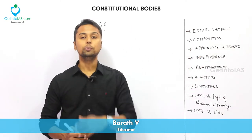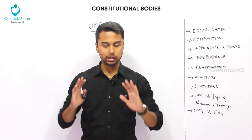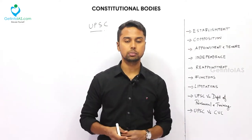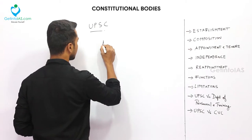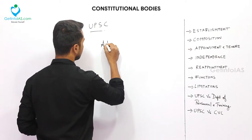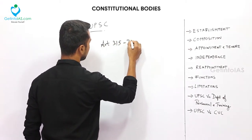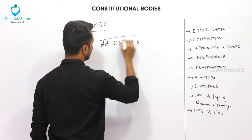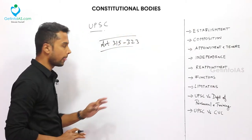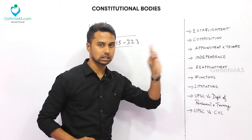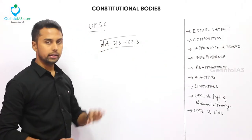UPSC is a Permanent Recruitment Agency. It is a recruitment agency and since it is a constitutional body, obviously it has an article. Articles 315 to 323 explain the full scope of UPSC. Article 324, we know, is the Election Commission, which we have studied already.